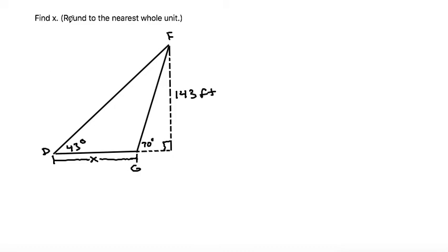This problem says to find x, round to the nearest whole unit. In this triangle, the x is part of this non-dotted triangle, but the non-dotted triangle is not a right triangle.